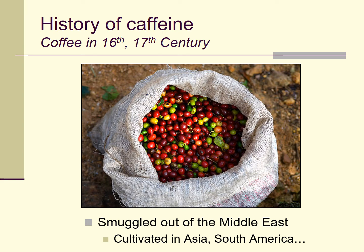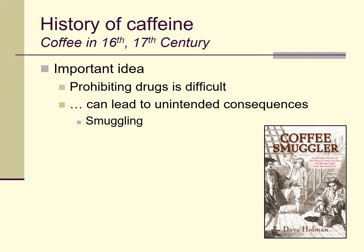Anywhere between the Tropic of Cancer and the Tropic of Capricorn roughly is the 'coffee zone' — close enough to the equator for a hot, moist climate that can grow coffee. In America, the only place that satisfies that requirement is Hawaii, where you can get some really nice coffees. An important idea that comes out of this is that prohibiting drugs is difficult. I'm not here to argue that drugs should all be legal or widely available — I just think it's historically evident, even from drugs which seem relatively benign like caffeine in coffee or tea, that prohibition just doesn't often work.